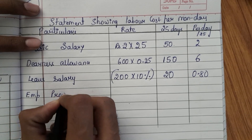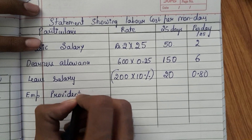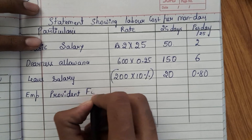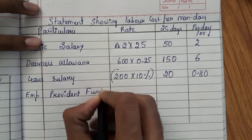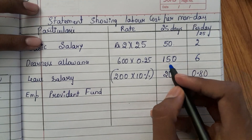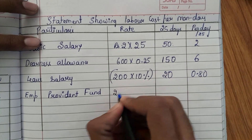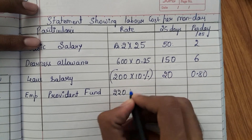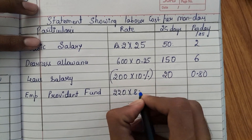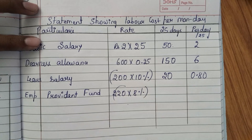Next is employer's provident fund contribution. They have told that it is 8% of the above three — that is 150 plus 50 plus 20, which equals 220. So 220 into 8% gives rupees 17.60 for 25 days.